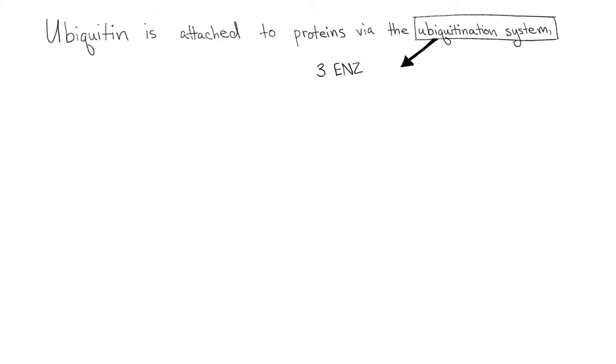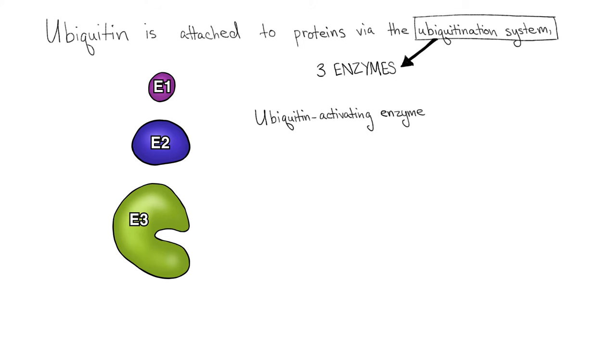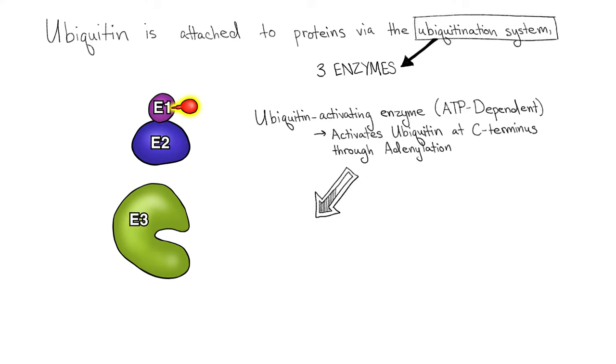The ubiquitin is attached to proteins via the ubiquitination system, which involves three enzymes: E1, E2, and E3. Ubiquitin-activating enzyme, otherwise called E1, is ATP-dependent. E1 activates ubiquitin at the C-terminus through adenylation and transfers it to one of a set of ubiquitin conjugating enzymes, otherwise called E2 enzymes, through transthiolation.